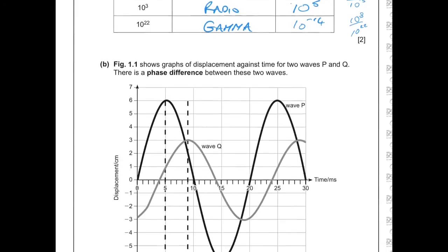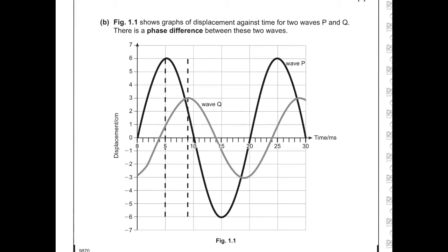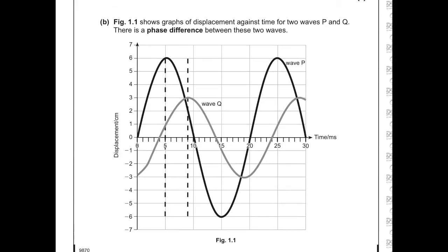Part B: Figure 1.1 shows graphs of displacement against time for two waves P and Q. There is a phase difference between these two waves — you can see they peak at two different locations. The dotted lines are showing the gap between equivalent points on the two waves.